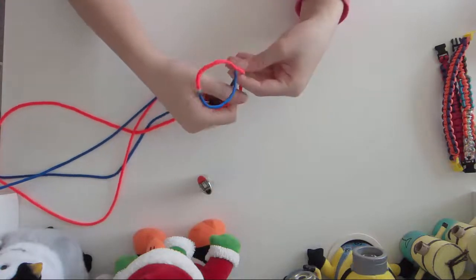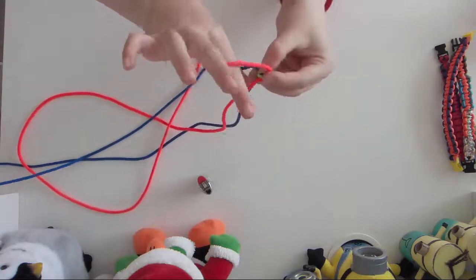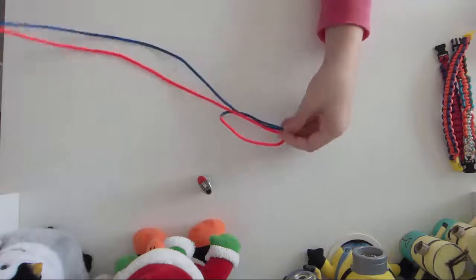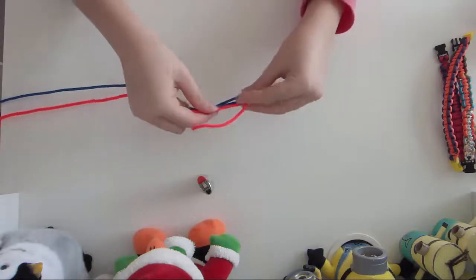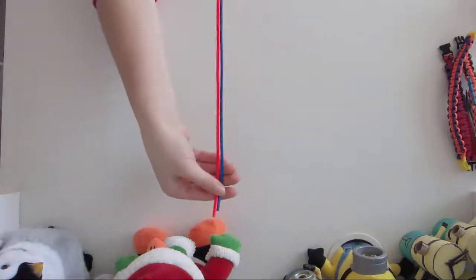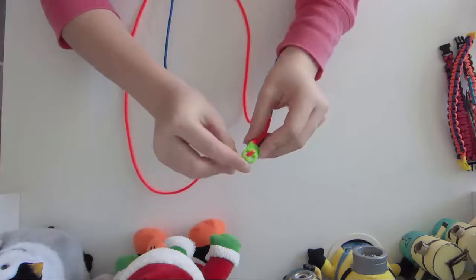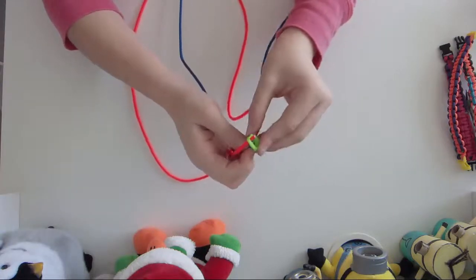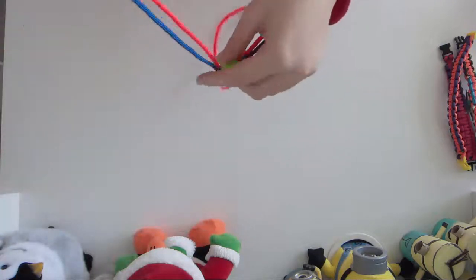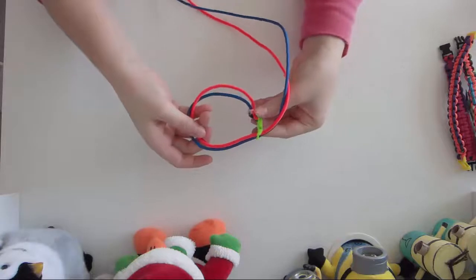Then you just make a knot. Stick your pointing finger and your thumb in the loop, then grab the 2 strings and pull them out. Then pull this one, get the ends again, and pass them through the bottom so that it makes this kind of loop.